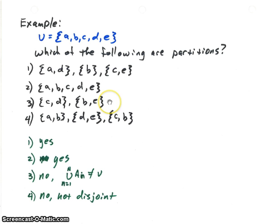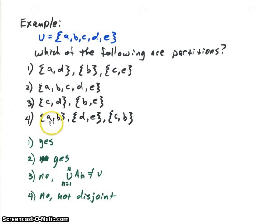The last group has three sets whose union does give back the universal set. However, the first set and the third set have an element in common, B. So they are not mutually disjoint, and therefore that is not a valid partition.